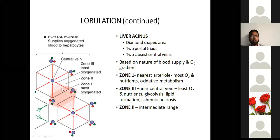For pathological calculations, we use the zones and the liver acinus. In reality, the important structure is the hepatic lobule — the classic hepatic lobule. That is the important thing.